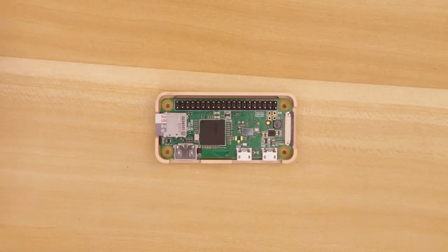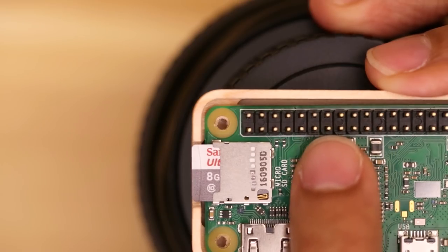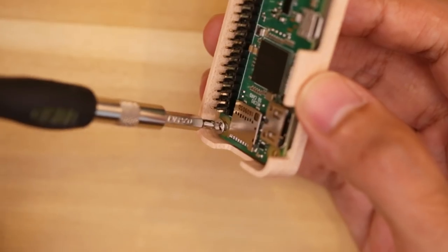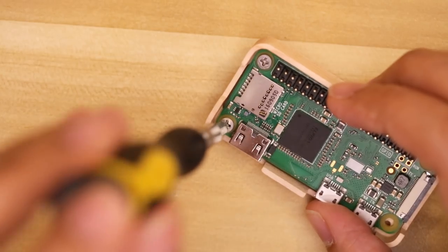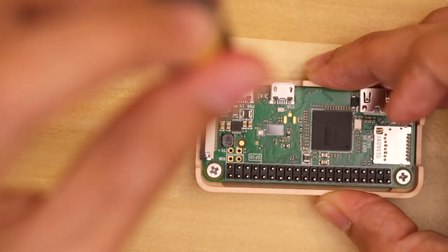With that done, we can install the Pi into the bottom half of the case, then position the board so that the mounting holes line up with the standoffs. I used M2.5 screws to secure the board to the case. These are pretty short screws, they're about 5mm long.